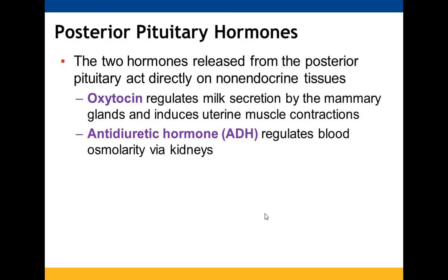Two hormones made by the hypothalamus are stored in the posterior pituitary and released to act on non-endocrine tissues: oxytocin, which plays a role in milk secretion by the mammary glands and uterine muscle contractions during labor; and ADH, which helps regulate blood osmolarity. When blood osmolarity increases, ADH is released to allow the kidneys' collecting ducts to reabsorb water and also causes thirst to increase overall blood volume and bring osmolarity back down.